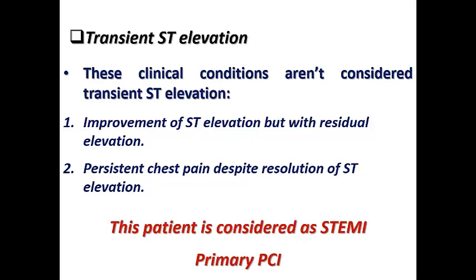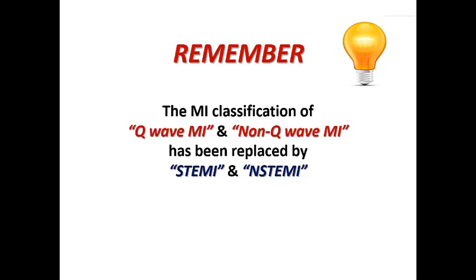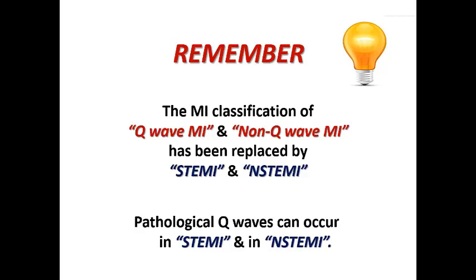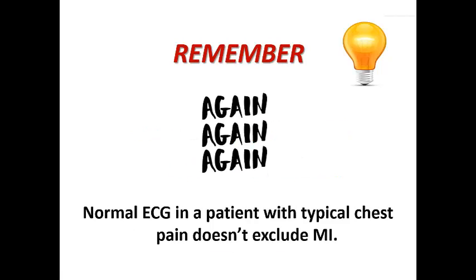Transient ST elevation is considered high-risk non-ST ACS requiring early invasive strategy within 24 hours. If recurrent transient ST elevation occurs, this is a stuttering course of MI requiring urgent invasive strategy — the vessel is nearly totally occluded. Remember, the MI classification of Q-wave and non-Q has been replaced by STEMI and non-ST because pathological Q can occur in both. Normal ECG in a patient with typical chest pain does not exclude MI — up to 25% of non-STEMI patients may have normal ECG on presentation with positive cardiac markers.